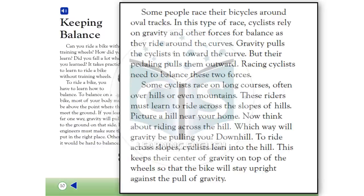Some cyclists race on long courses, often over hills or even mountains. These riders must learn to ride across the slopes of hills. Picture a hill near your home. Now think about riding across the hill. Which way will gravity be pulling you? Downhill. To ride across slopes, cyclists lean into the hill. This keeps their center of gravity on top of the wheels, so that the bike will stay upright against the pull of gravity.